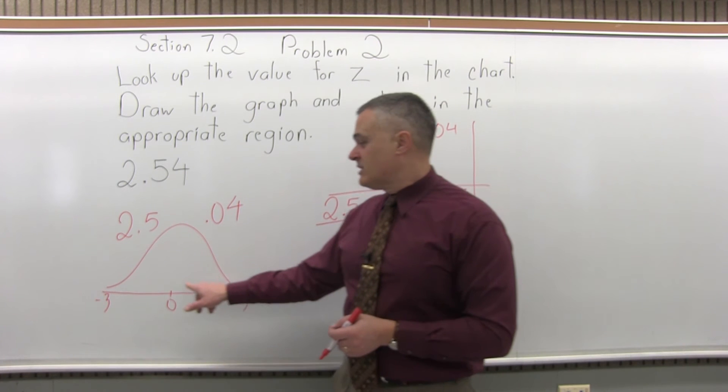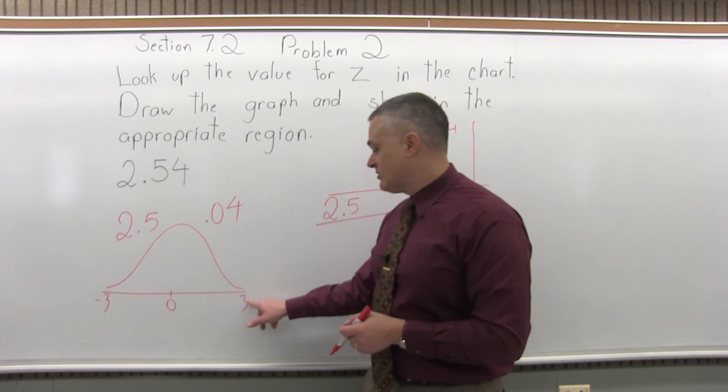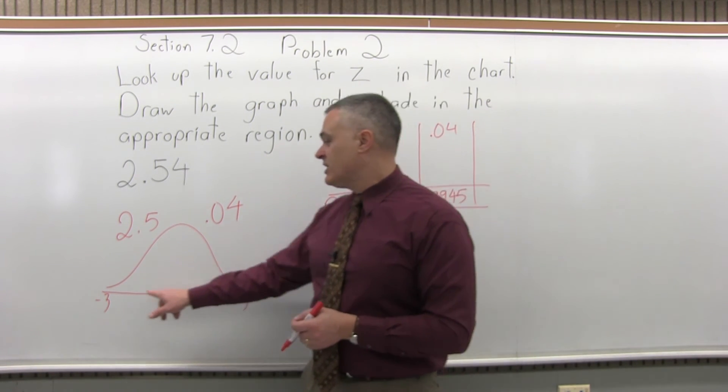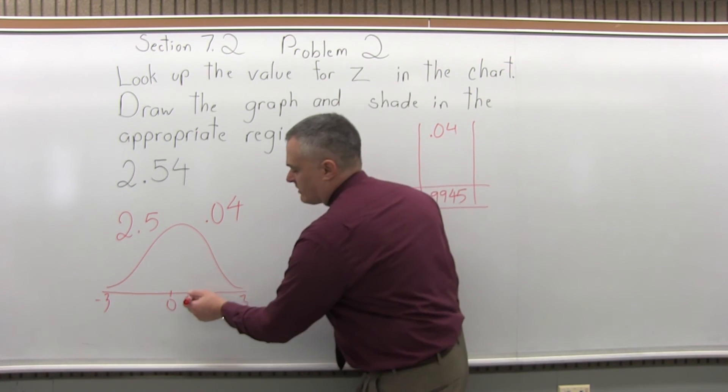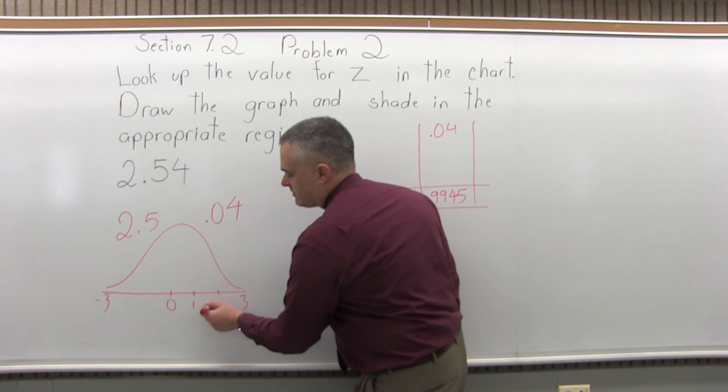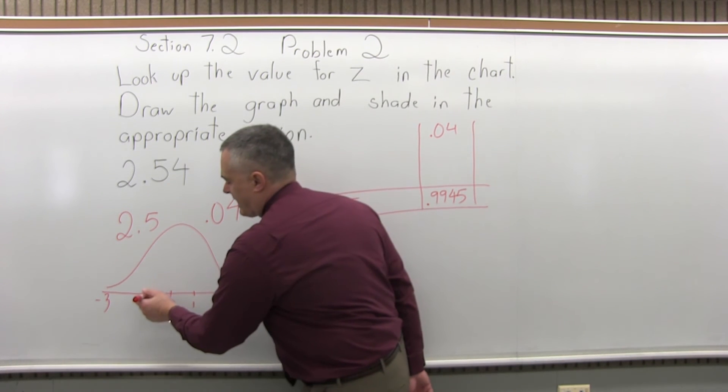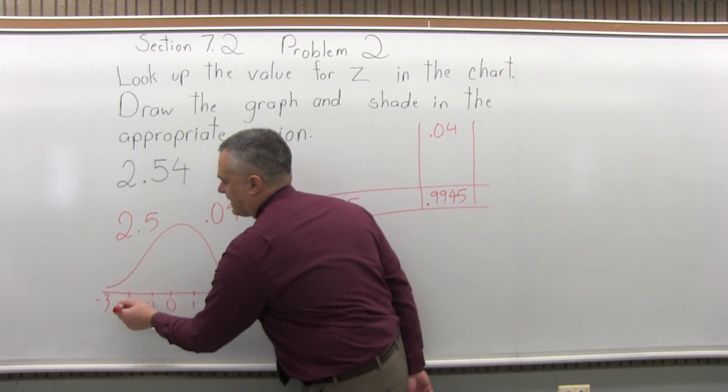On the right end, where you stop bothering to draw, you put a positive 3. On the left end, a negative 3. That means three standard deviations bigger than the average, three standard deviations smaller than the average, and then by one, you can fill in 1, 2, 3, and on the left half, negative 1, negative 2, negative 3.